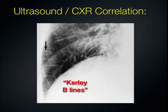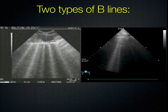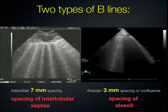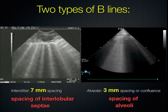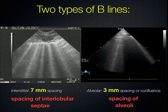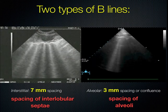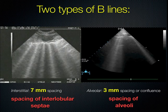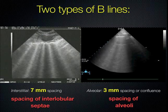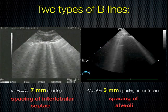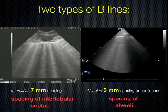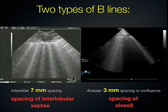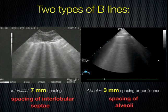B lines are essentially the ultrasound equivalent of radiological Kerley B lines. You can see how these Kerley B lines come up to the surface perpendicularly. There are essentially two types of B lines: the first is spaced approximately seven millimeters apart from the pleural line, and the second is three millimeters apart. This coincides with whether the fluid is trapped in the interstitium or in the alveoli. The three millimeter spacing, or confluent B lines, is the ultrasound equivalent of the radiological finding of ground glass on CT scan.